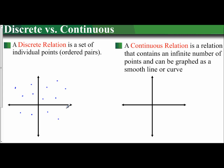But a continuous relation, just as you see in the first word 'continuous', it's going to continue. You're not going to be able to see where the start or the end is. It's a relation that contains an infinite number of points and can be graphed as a smooth line or curve.